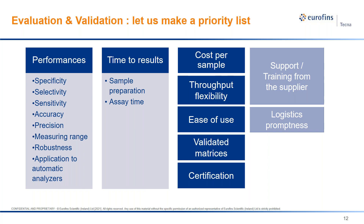Precision is also very important — it is the degree of agreement among individual test results that are repeated, and it is a mandatory requirement for any analytical method. Even more important than accuracy, which is how close your result is to the true value. We can imagine a system that systematically overestimates the concentration of a toxin — that could be managed if known and predicted — but a random behavior leads to scattered, unpredictable results that are hard to handle. So precision and robustness are really important aspects to be validated when selecting an analytical tool for mycotoxins.